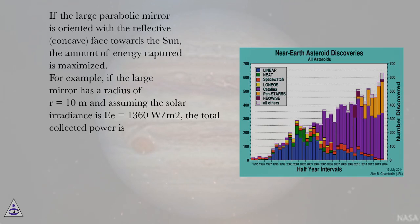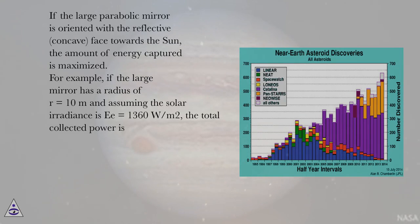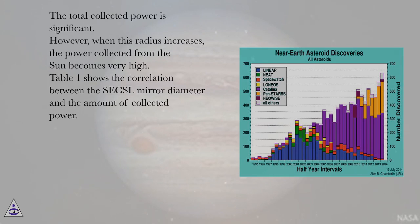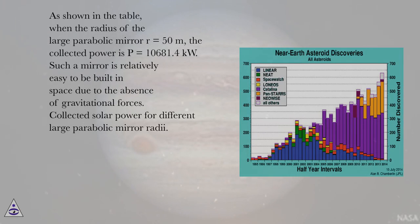If the large parabolic mirror is oriented with its reflective concave face toward the sun, the amount of energy captured is maximized. For example, if the large mirror has a radius of R = 10 meters and the solar irradiance is E = 1360 W/m², the total collected power is significant. When this radius increases, the power collected from the sun becomes very high. When the radius of the large parabolic mirror R = 50 meters, the collected power is P = 10,681.4 kilowatts. Such a mirror is relatively easy to build in space due to the absence of gravitational forces.